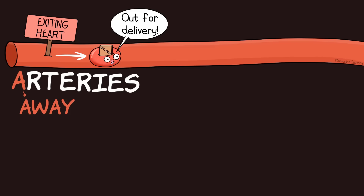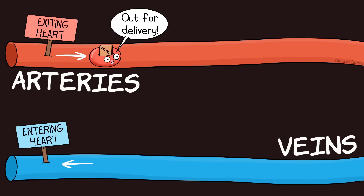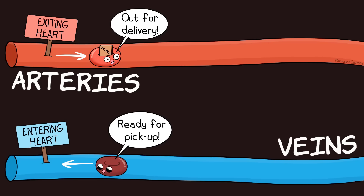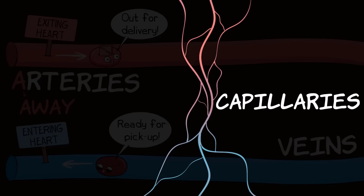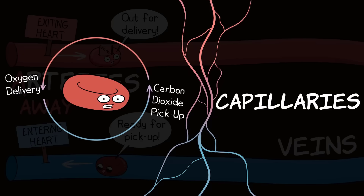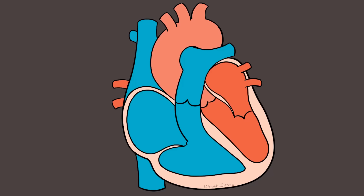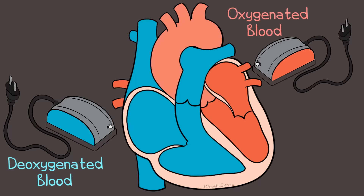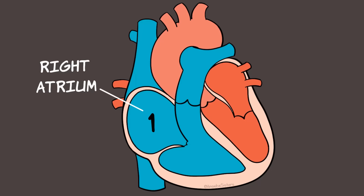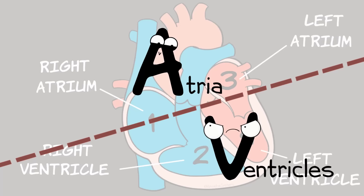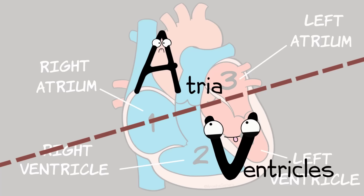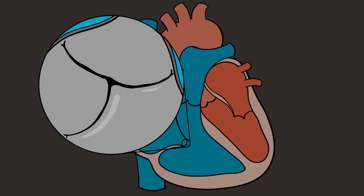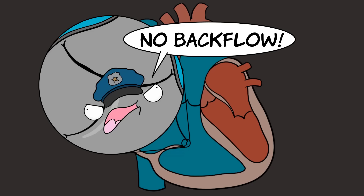Arteries carry blood away from the heart — think 'A for away.' Arteries are typically oxygen-rich, but there are exceptions. Veins generally carry blood to the heart and are typically oxygen-poor, but there are exceptions. Capillaries are small blood vessels, and it is at the capillary level where oxygen is delivered to organs and tissues and where carbon dioxide is picked up to travel back to the lungs. Looking at the heart, the right side pumps deoxygenated blood and the left side pumps oxygenated blood. We can see four chambers: the right atrium, right ventricle, left atrium, and left ventricle. Since A comes before V in the alphabet, the atria are at the top and ventricles are at the bottom. Atria have thinner walls than the thicker-walled ventricles. The heart also contains valves — one-way structures that separate the chambers and prevent backflow of blood.